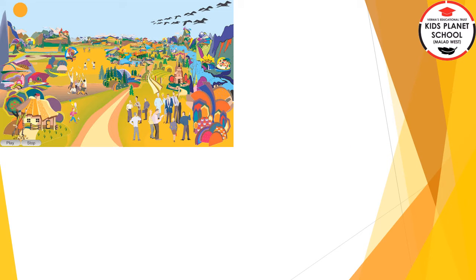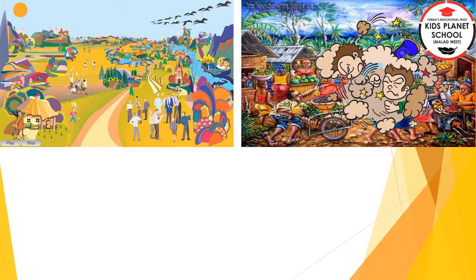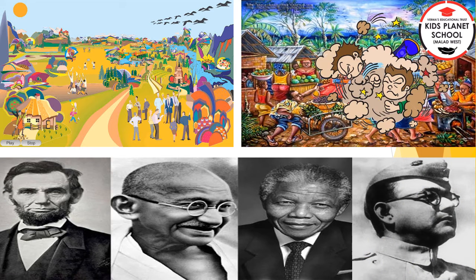Individual or collective actions of human beings have consequences — they result in an environment that may be either favourable or unfavourable for society. For example, if the people of a village work together and help one another, the village makes good progress. By telling us life stories of great people, history also serves to inspire and motivate us.